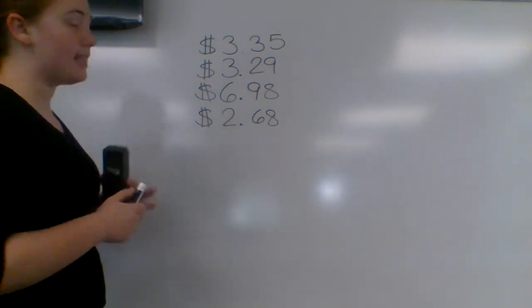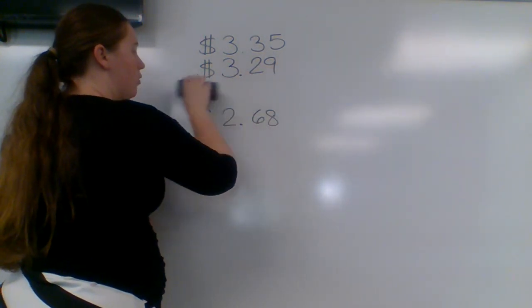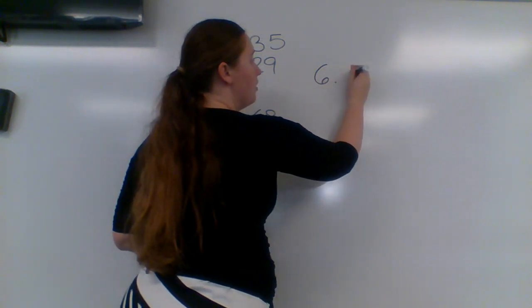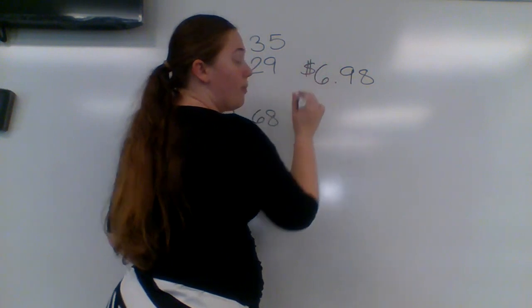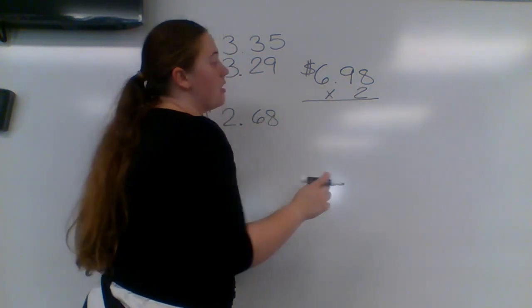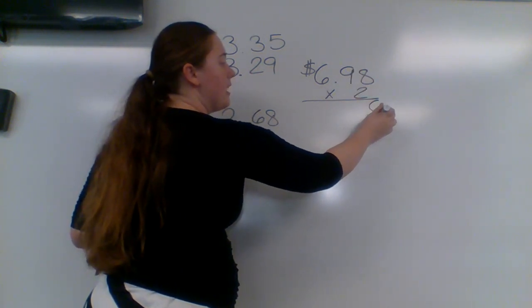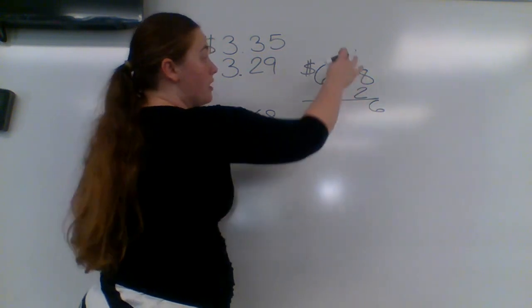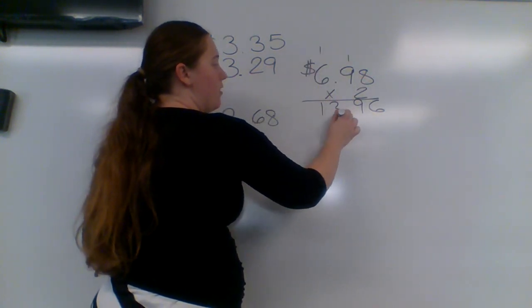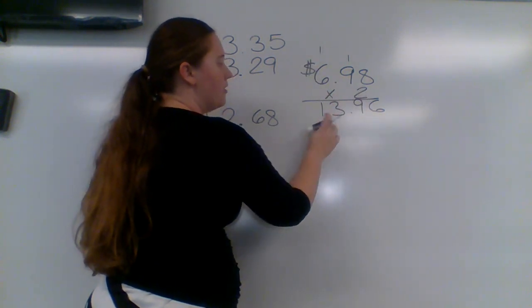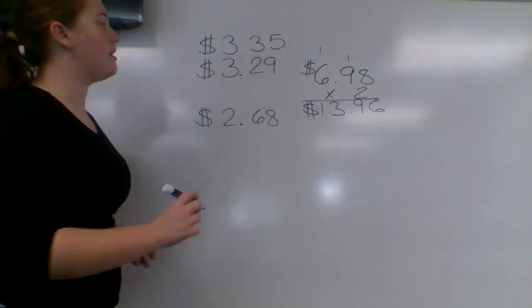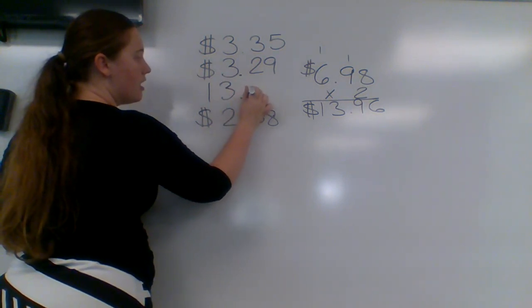So, let's go ahead and erase that number. And how am I going to figure out how much that turkey costs? Well, I know that's $6.98 for 1 pound. But there was 2 pounds of it bought. So I can multiply by 2 to show that there's 2 pounds of turkey being purchased. And I can say 2 times 8 is 16. Carry the 1. 9 times 2 is 18. Plus 1 is 19. Carry the 1. 2 times 6 is 12. Plus 1 is 13. The 1 doesn't need to be carried. There's no other numbers. But I do need to put a decimal point and a dollar sign. So, it's not $6.98. It's $13.96.